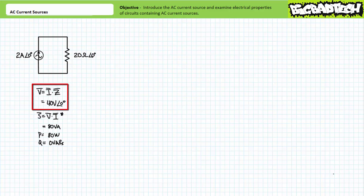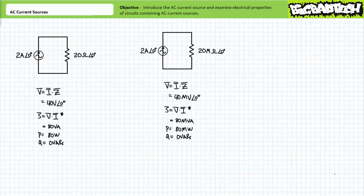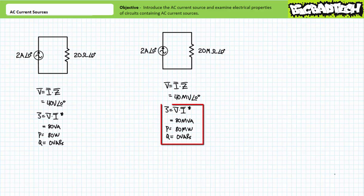With two amps at an angle of zero traveling through an impedance of 20 ohms at an angle of zero, an application of Ohm's law shows the voltage drop across it will be 40 volts at an angle of zero degrees. An application of the AC power formula demonstrates the AC current source is delivering 80 volt amperes of apparent power, of which 80 watts is directed towards real power and zero VARs towards reactive interchange. When we swap out this load for one with an impedance of 20 mega ohms at an angle of zero degrees, Ohm's law shows the voltage drop will be 40 megavolts at an angle of zero degrees, and the source delivers 80 megavolt amperes of apparent power, of which 80 megawatts is real power.